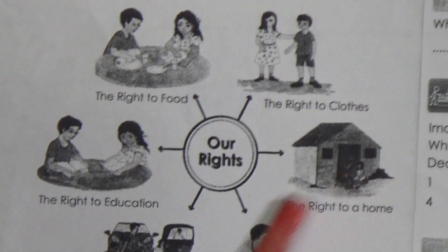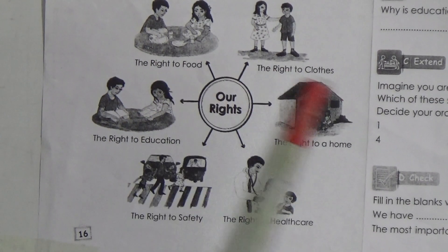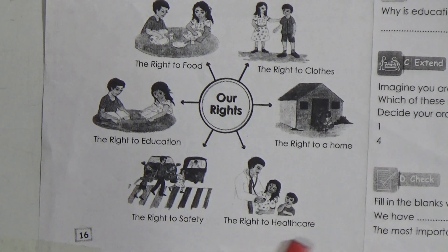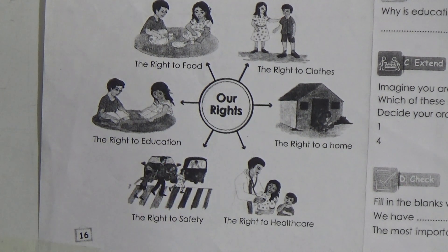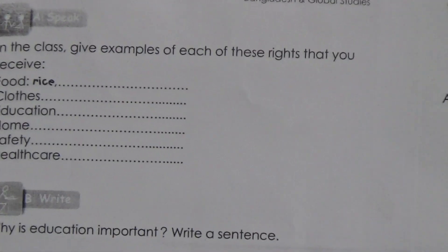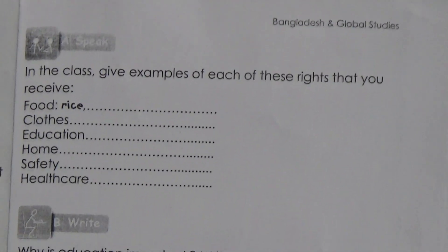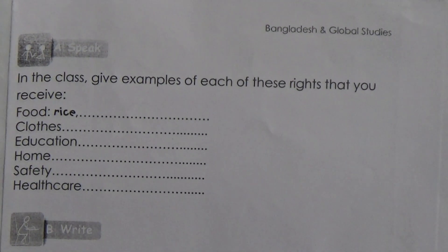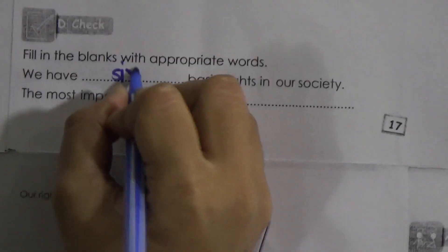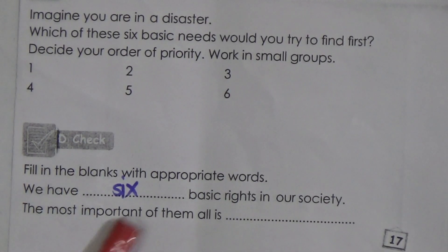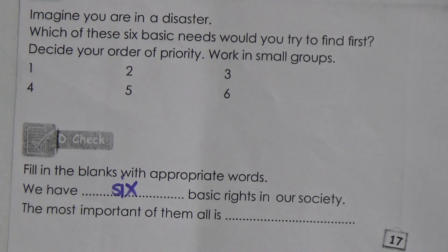Look at the picture showing our rights: the right to food, the right to clothes, the right to a home, the right to healthcare, the right to safety, and the right to education. Now for Section D — fill in the blanks with appropriate words. We have six basic rights in our society, and the most important of them all is food.